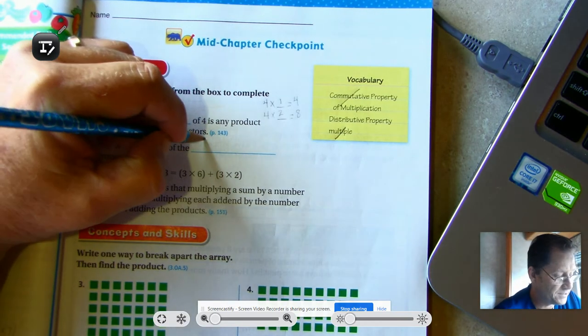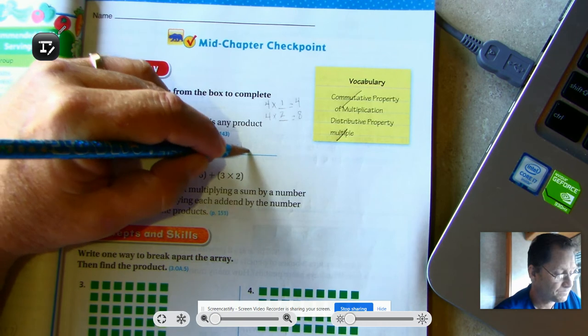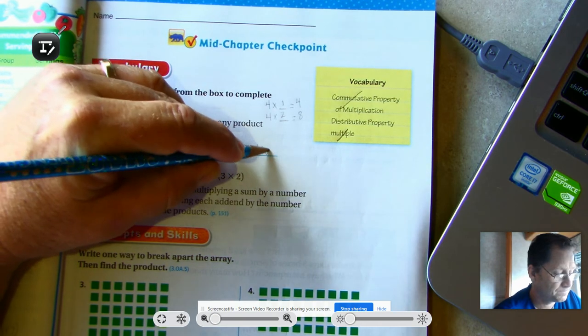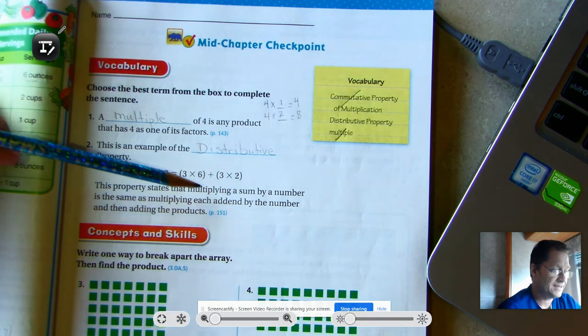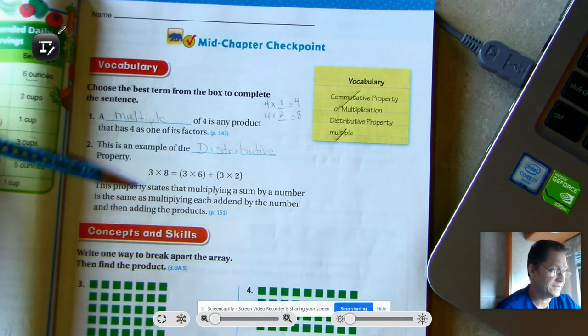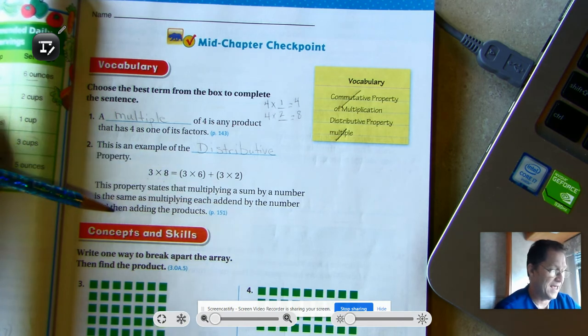So number two would be the distributive property. And this property states that multiplying a sum by a number is the same as multiplying each addend by the number and then adding the products.